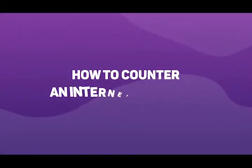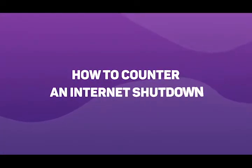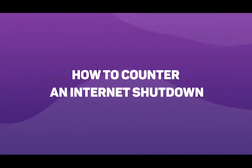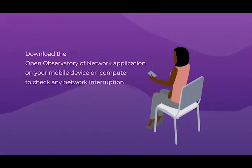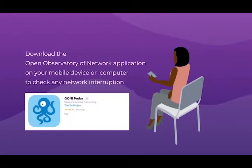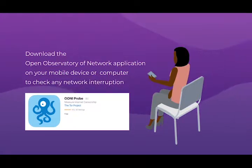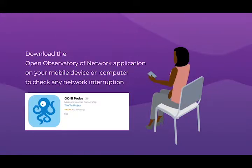How to counter an internet shutdown. First, make sure the internet is really down. Download the Open Observatory of Network Interference (OONI) application on your mobile device or computer to check for any network interruption. OONI probes store a public record of blocking, filters, and throttling all over the world.